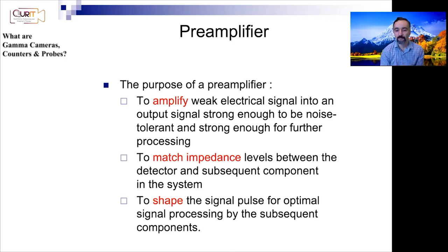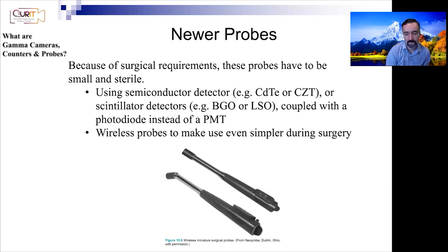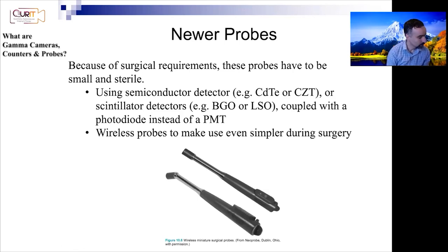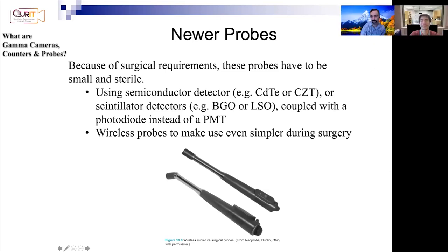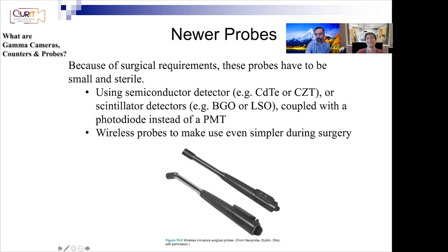Before moving on, it's worth mentioning — because of this example of probes — we just saw how radiation is detected using probes. Remember when we talked about Cherenkov radiation? That's another way of doing it with a similar procedure: the radioisotope is injected, but instead of having a probe, you would actually see light emission because those particles are moving faster than the speed of light in the patient. It would be a darker room and the physician would be able to see where it is glowing. It's still in research, not fully implemented in the clinic, but it exists.